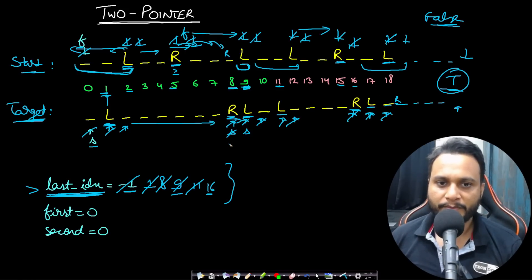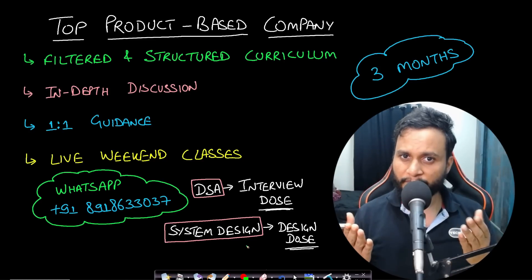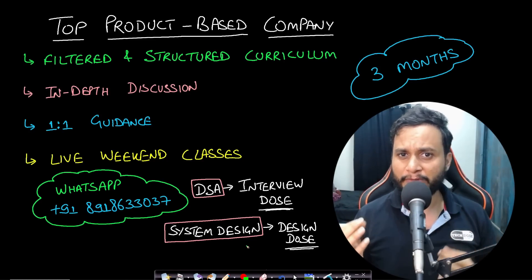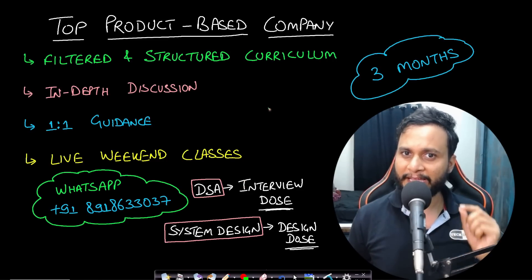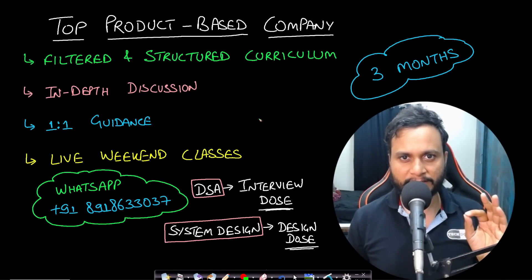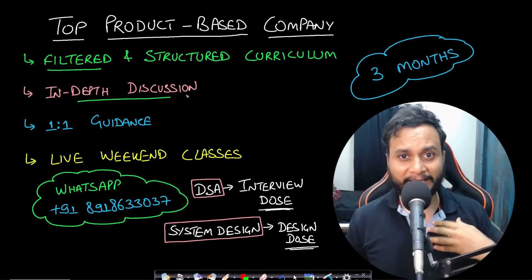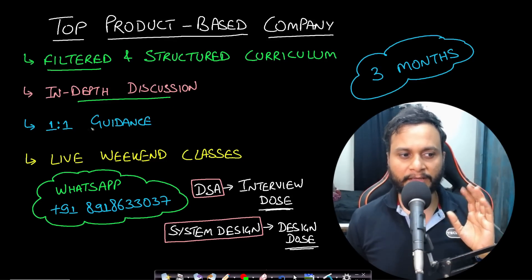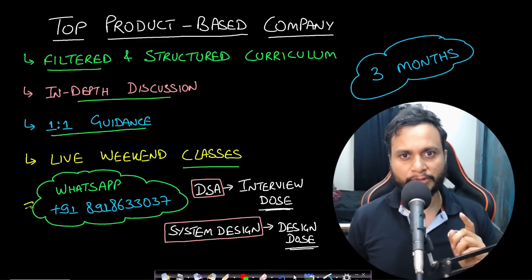This is the entire two-pointer approach — it has three cases and is a bit tricky, but it is implementable. The time complexity is O(n) and space complexity is O(1). Now let's look at the code. If you're preparing for top product-based companies within three months, we have both DSA and system design live interview training programs with a condensed curriculum, in-depth discussion, one-on-one guidance, and live weekend classes.